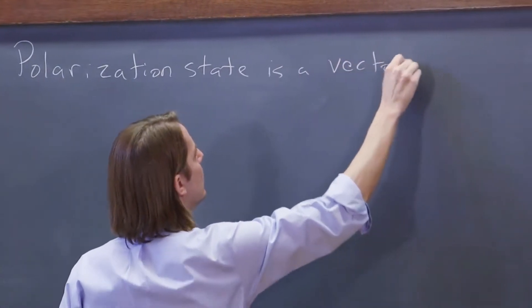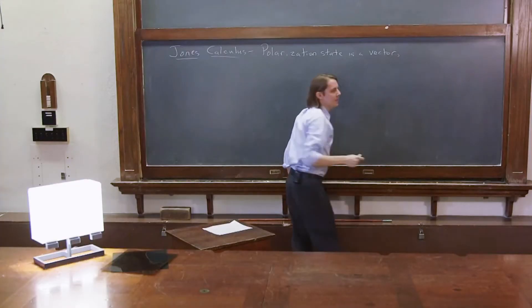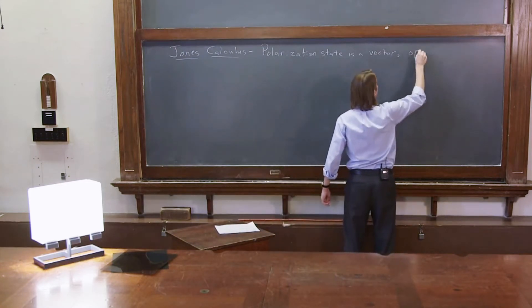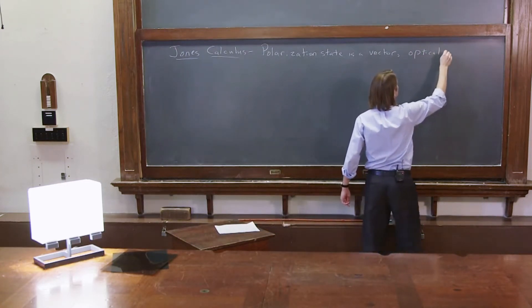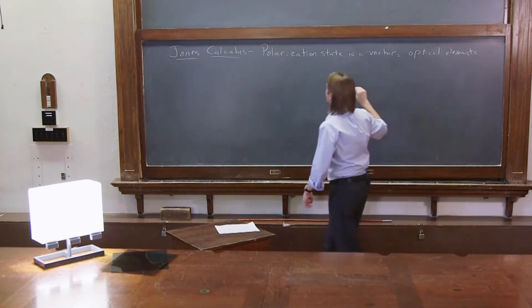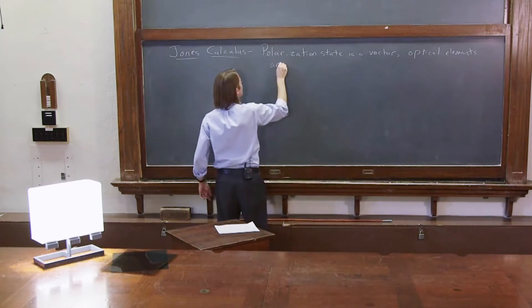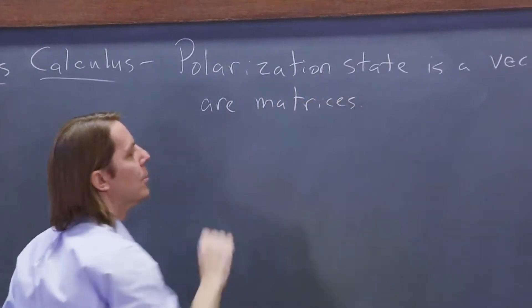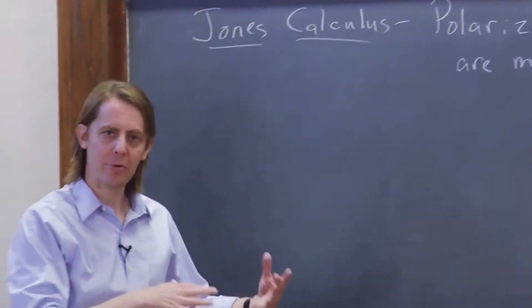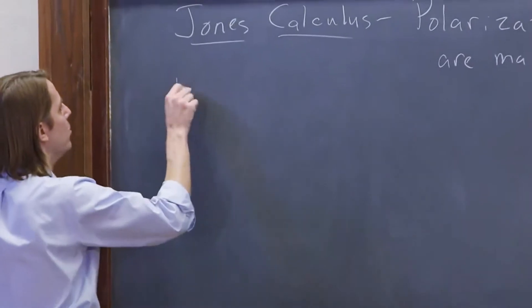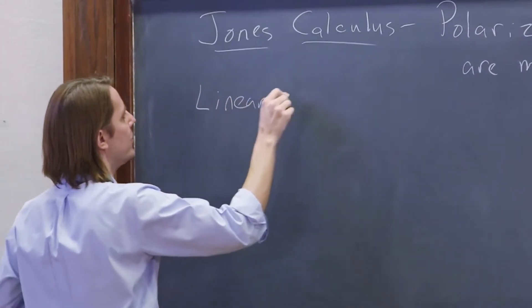But it does more than that. Different polarizers, different optical elements, are matrices or can be represented by matrices. When you multiply the matrices times the vectors, you find out what happens. So let's look at the linear polarizer in terms of Jones Calculus.